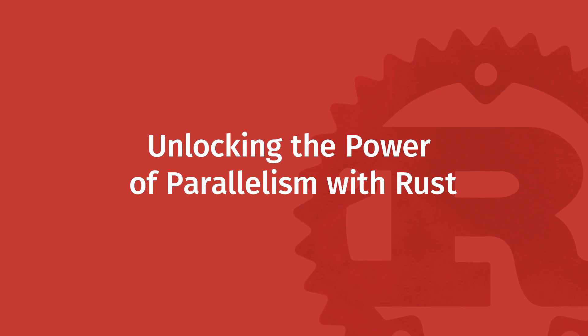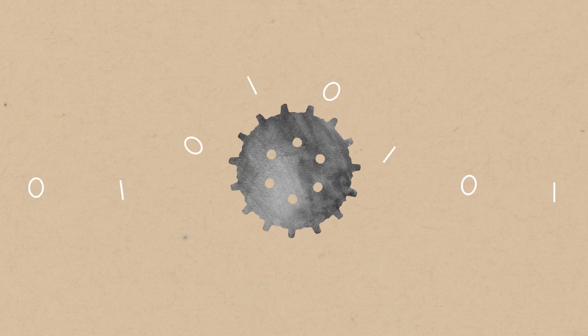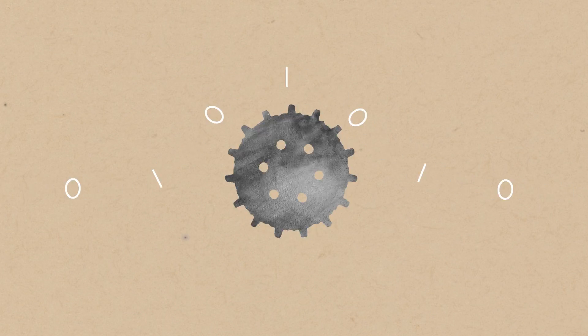I've got one word for you: Rust. We're kind of at an inflection point in the history of computing, where computers aren't getting faster. Years ago, processors were just getting faster and faster in terms of single execution. But then at some point, they ran into very fundamental limitations, and so what they started to do was to add more cores to processors.